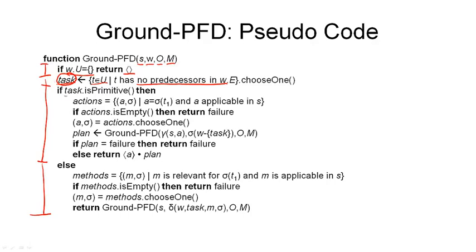If our chosen task is primitive, then we proceed pretty much as we've done in the previous TFD version of the algorithm. The first thing we have to do is compute the set of all those actions that match the task and are applicable in our given state. So this is the set of all actions that fulfill these properties. If this set is empty, then again we can return failure as this branch of the search tree does not contain a solution plan.